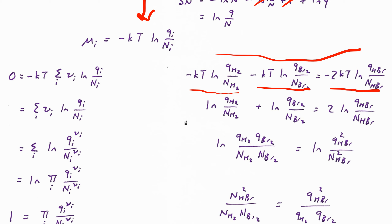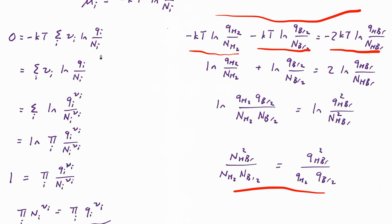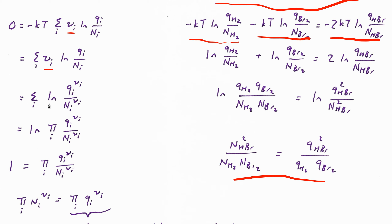Going back to do the same thing for the general case — any reaction where stoichiometric coefficients times chemical potentials sum to zero — the algebra is exactly the same, just more abstract. The sum of stoichiometric coefficients times chemical potentials equals zero; each chemical potential is −kT log(q/n), each multiplied by its stoichiometric coefficient ν. Dropping the kT's: 0 = Σ ν log(q/n), which by log rules is the same as 0 = Σ log(q/n)^ν, and that sum of logs is the log of a product.